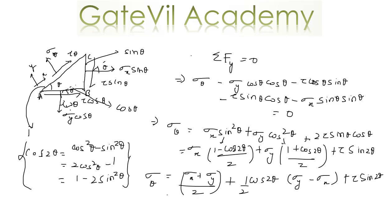We now have the analytical expressions for Sigma theta and tau theta, which can be used for any 2D stress system depending on the values of Sigma X, Sigma Y, and tau at a given angle theta. One important warning: Sigma X and Sigma Y are assumed tensile by default, so if they are compressive in nature, you must put a minus sign with their values. In another lecture, we will solve a question to calculate stresses on an inclined plane.